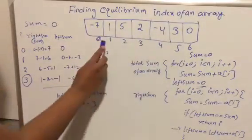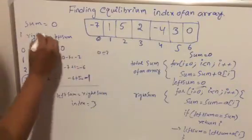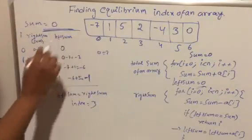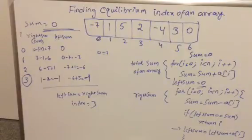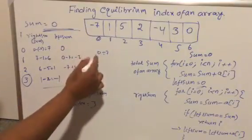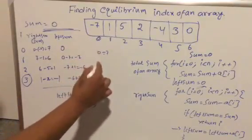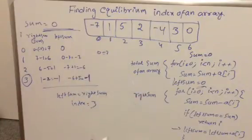We take the total sum of all elements, then track a left sum and a right sum. We loop through the array and check whether the left sum is equal to the right sum as we iterate.